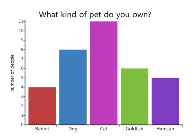Now take a look at the other animals — cats, goldfish, and hamsters. How many people owned each type of those pets? For cats, we can see that it was 11. For goldfish, if we go across, we see that it was six. And for hamsters, five people owned hamsters.